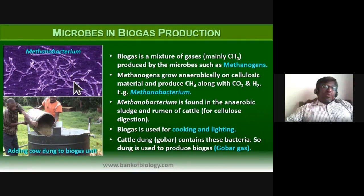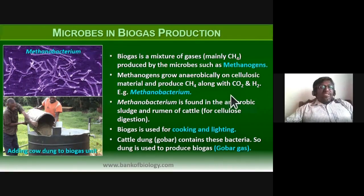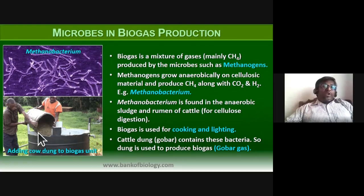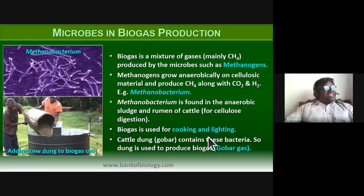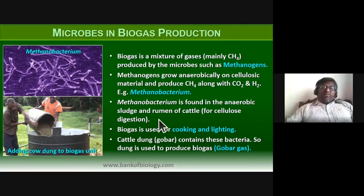Methanogens don't require oxygen — they grow anaerobically on cellulosic material and produce methane along with carbon dioxide and hydrogen. An example of a methanogen is Methanobacterium, found in anaerobic sludge and also in the rumen of cattle, where it helps in cellulose digestion through a symbiotic association.